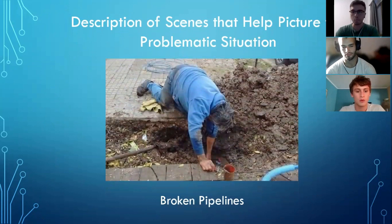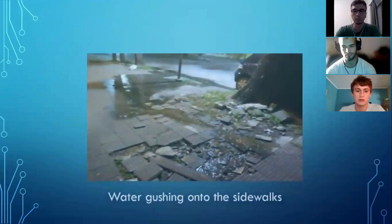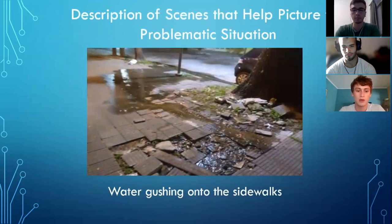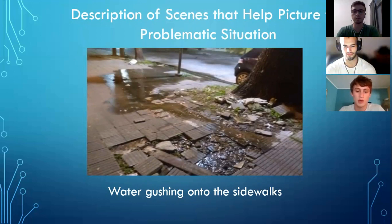Now we will describe scenes that help picture the problematic situation. In this picture, we can see one common situation in the Santiago neighborhood: this pipe has been broken for a long time. In this other picture, another situation can be observed — water gushing onto the street or sidewalks due to broken pipes. This scenario becomes worse when it rains, because the water from the rain and from the broken pipes makes the streets completely flood.